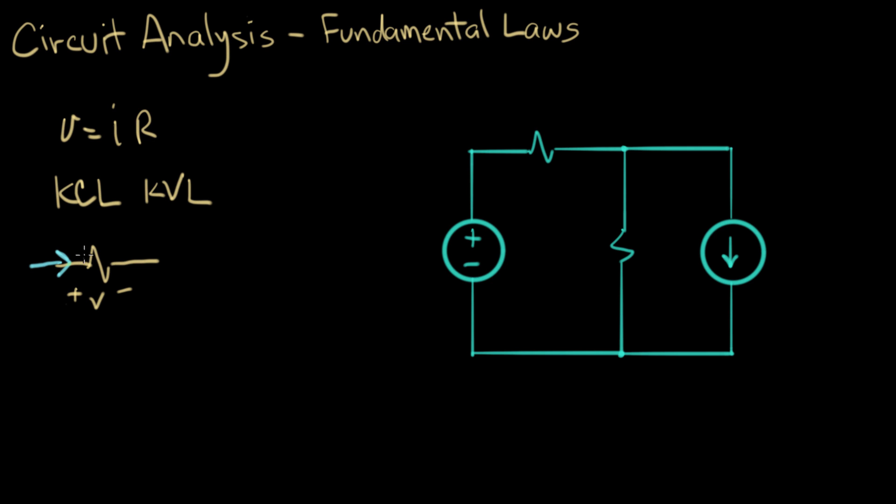And I've drawn a circuit here. So what we see is we have a voltage source. We'll call that Vs and give it a value of 15 volts. We have a resistor R1 that has a value, we'll give that a value of 4k ohms.